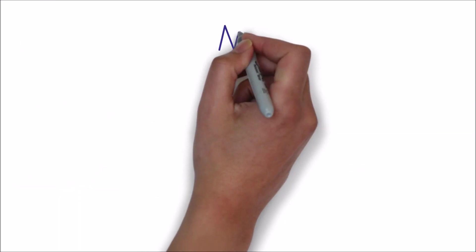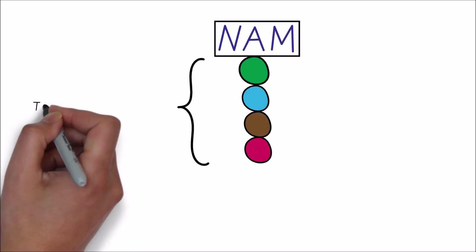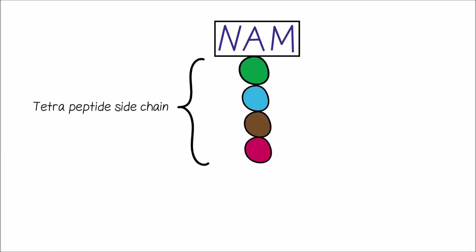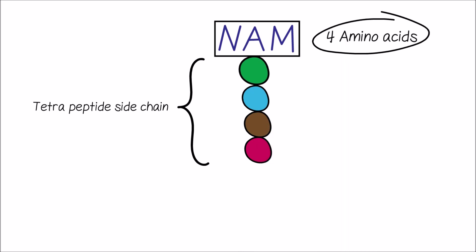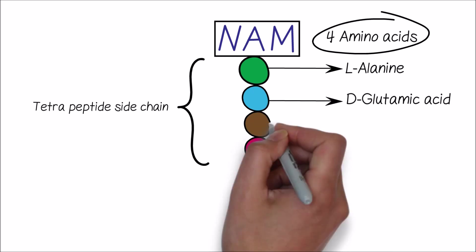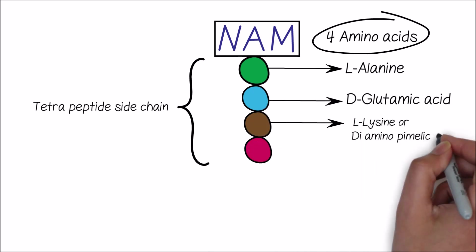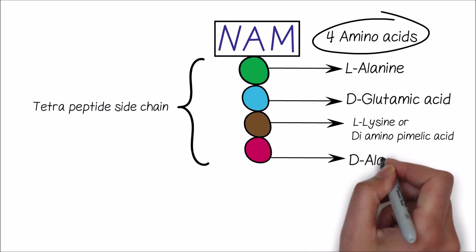The carboxyl group of N-acetylmuramic acid is connected to a tetrapeptide side chain. This tetrapeptide side chain is composed of four amino acids, which include L-alanine, D-glutamic acid, L-lysine or diaminopimelic acid, and D-alanine.